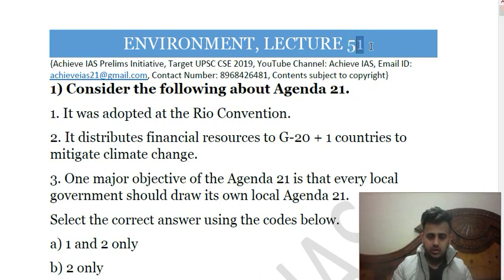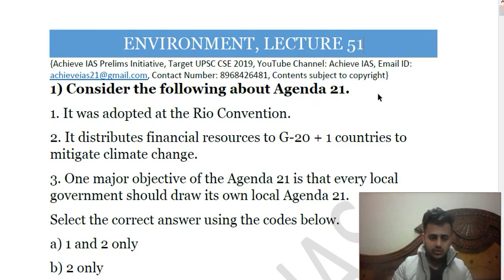The first question asks us to consider the following about Agenda 21: one, it was adopted at the Rio convention; two, it distributes financial resources to G20-plus-one countries to mitigate climate change; three, a major objective of Agenda 21 is that every local government should write its own Local Agenda 21. The first statement is correct — it was adopted at the Rio convention held in Rio de Janeiro, also known as the Earth Summit.